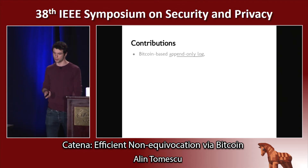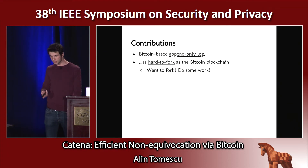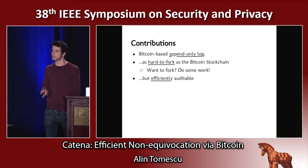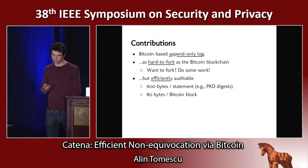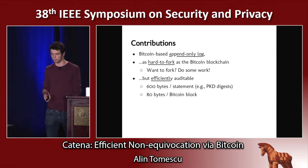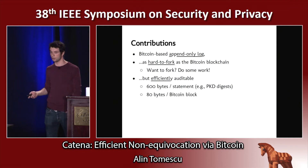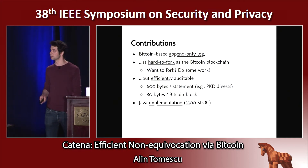What are our contributions? We built a Bitcoin-based append-only log that is as hard to fork as the Bitcoin blockchain. But importantly, it's efficiently verifiable — you don't have to download full blocks to verify our log. In particular, you only need to download 600 bytes per statement, where a statement is something like a Merkle tree hash or a public key directory digest. And you only need to download 80 bytes per Bitcoin block. We implemented this in Java and our code is open source.